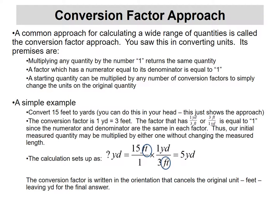This harks all the way back to the early units where we looked at units of conversion measurements and something called the conversion factor approach. That was really a three-step thought process. One is that if we multiply any quantity by the number one, it returns the same quantity. If you take 15 times one you get 15, 28 times one you get 28 — nothing very exciting about that.